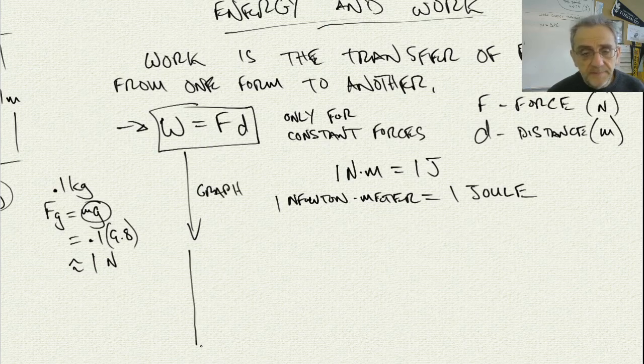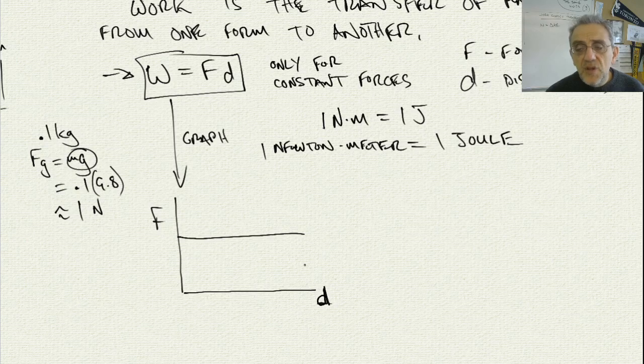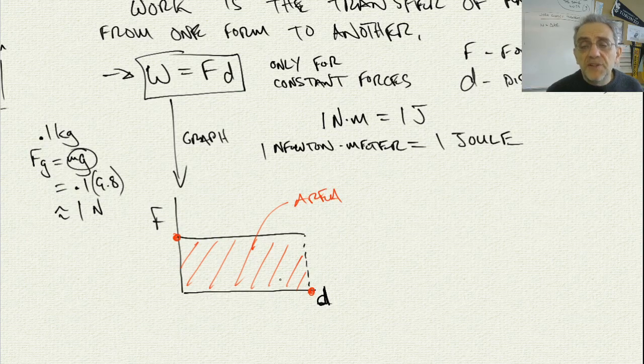Here is the force, and here is the distance. Notice that this force is applied over this distance. Now notice that this equation says force times distance. Well here is the force and here is the distance. What are we actually calculating by multiplying these two together? What we're actually doing is getting the area under the force versus distance graph. Therefore, the area under the graph is the actual true representation of the work done.